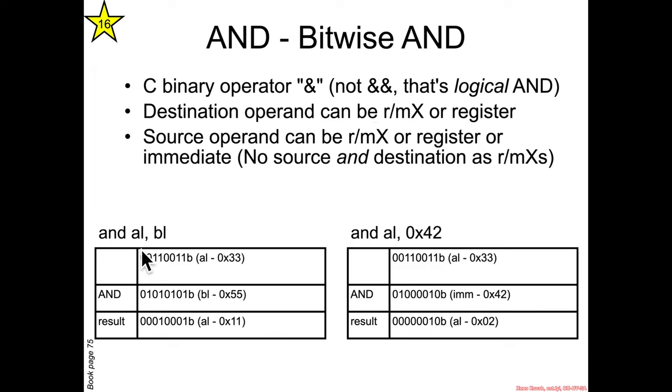The AND can have a two operand form and the destination can be RMX or a register and the source can be RMX or a register or an immediate but you can't have both the source and the destination as RMXs because that would lead to a memory to memory move which isn't supported on Intel for basic assembly instructions.